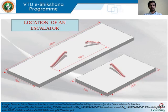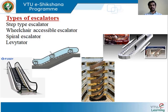Good afternoon everyone. In a previous class we understood a lot about escalators and we stopped at a slide where we were trying to understand the location or placement of an escalator. Proceeding further, we will understand different types of escalators. The first is the step type escalator, generally seen in large public areas. Second is the wheelchair accessible escalator, third is the spiral escalator, and fourth is the levitator. These are the different types used in the industry.